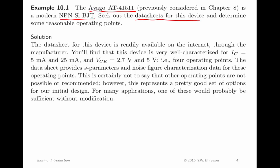You'll find this device is well characterized for four possible bias points. That is when the collector current is 5 milliamps and 25 milliamps and the collector emitter voltage is 2.7 volts and 5 volts. This is the manufacturer telling you that these are four bias points which they support and for which they are willing to provide additional data. In particular, they list the S-parameters for all four of those bias conditions and also they list noise figure characterization data, which is useful if you want to use this transistor in a low noise application.